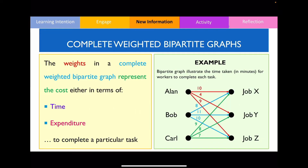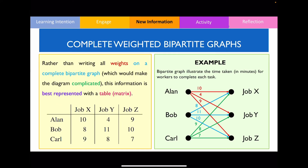A complete weighted bipartite graph contains weights on the graph itself, which can represent cost in terms of time or expenditure to complete a particular task. You can see the time it takes for each worker to complete each task. However, most of the time we don't include weights on the bipartite graph as it looks messy — it's better to represent this information in a table or matrix instead.